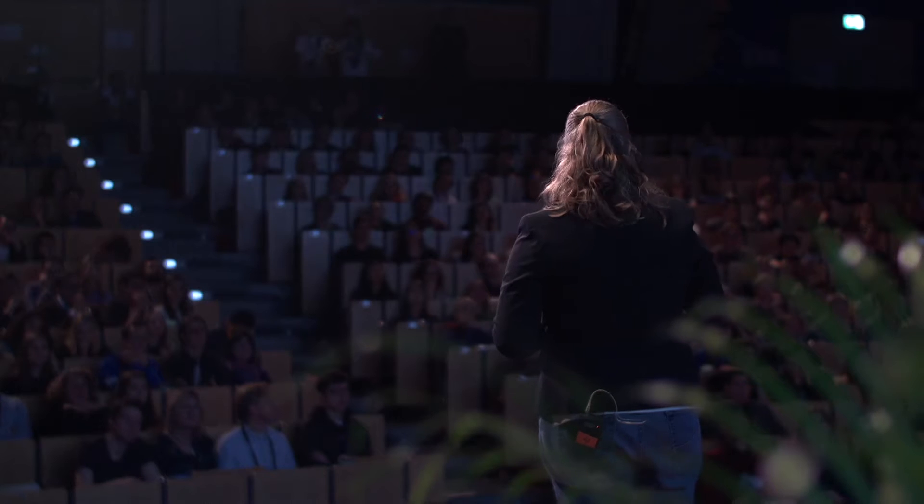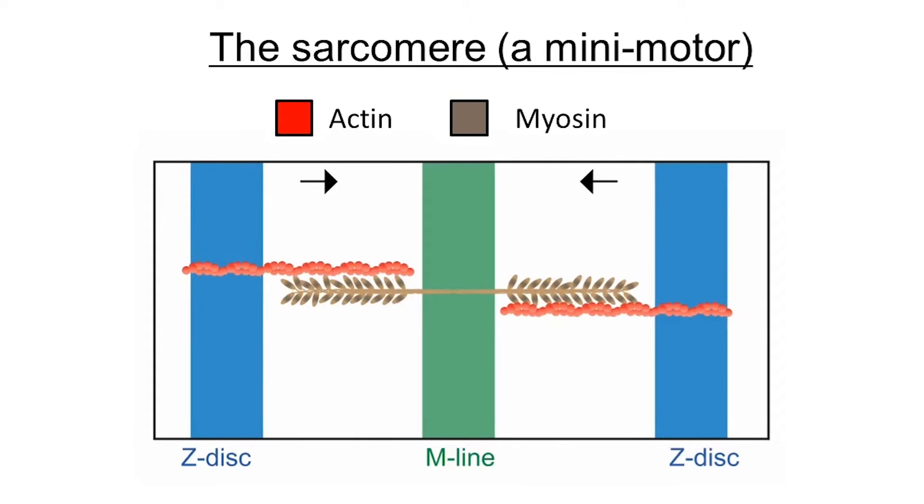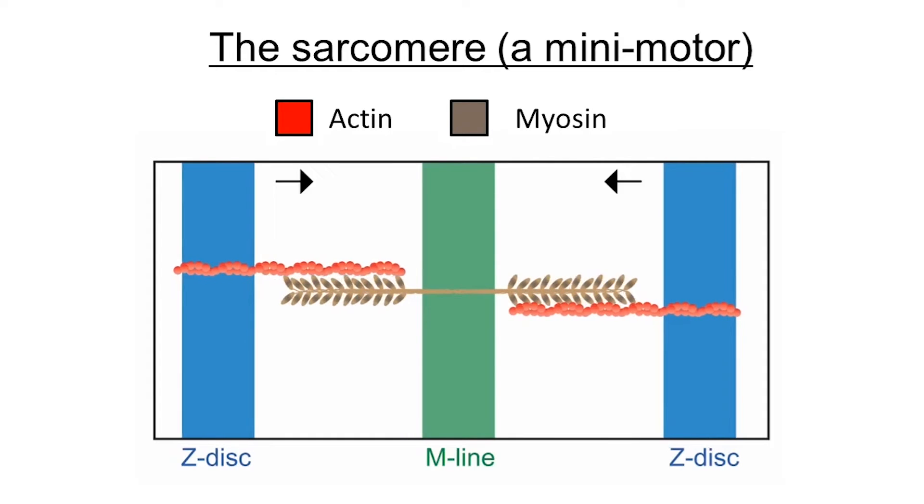The sarcomere is actually a motor — a molecular motor. At the simplest level, it consists of two things: actin and myosin. The actin filaments are anchored in the Z-discs, while the myosin is anchored in the middle, in the M-line. Myosin is actually a motor — it can reach out, grab actin, and pull on it. The myosin walks and grabs and pulls on the actin, and because the actin is anchored in the Z-discs, this causes the Z-discs to move closer to each other. This is what actually causes your muscles to contract.